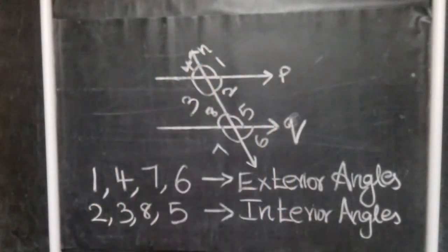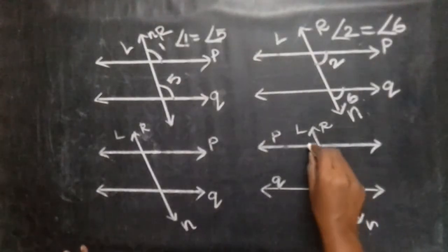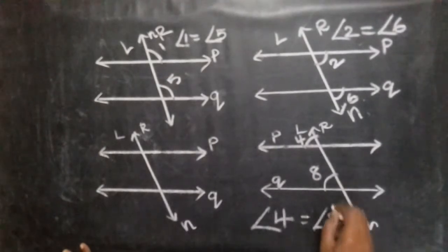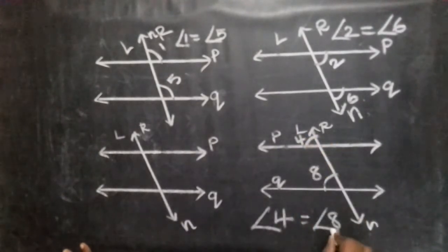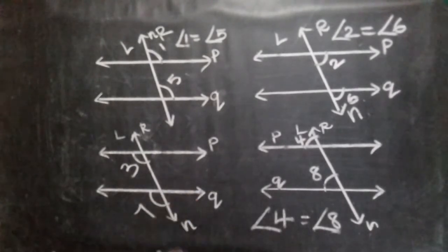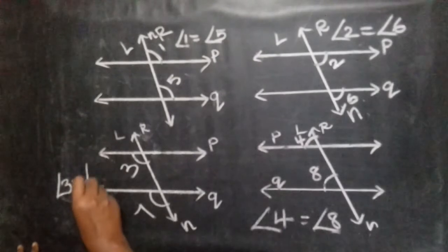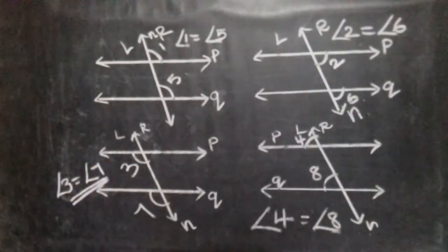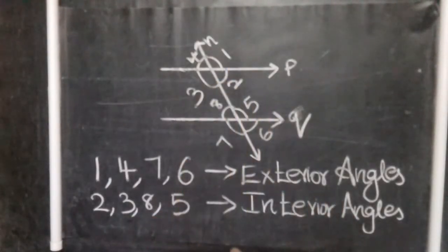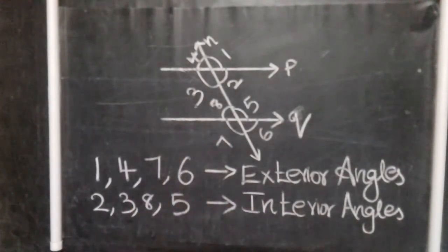On the transversal line, the corresponding angles on the left side: angle 3 is equal to angle 7, and angle 4 is equal to angle 8. These are equal in measure for parallel lines. So the 4 pairs of corresponding angles are: angle 1 = angle 5, angle 2 = angle 6, angle 3 = angle 7, angle 4 = angle 8.